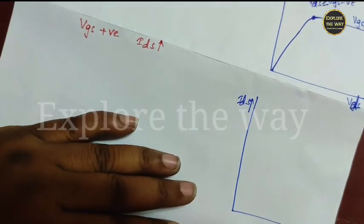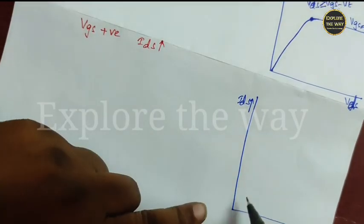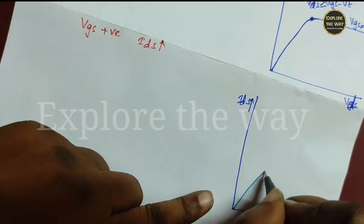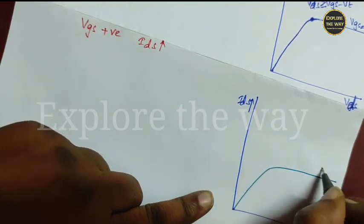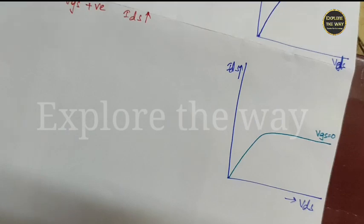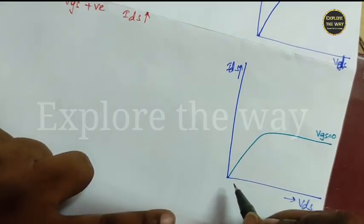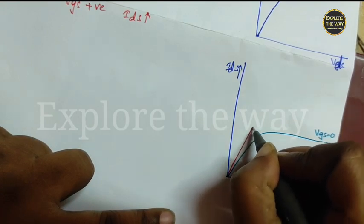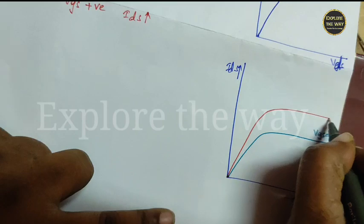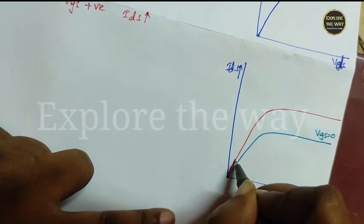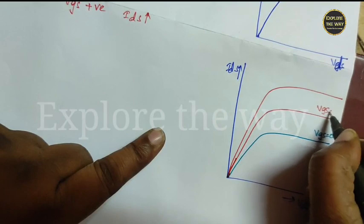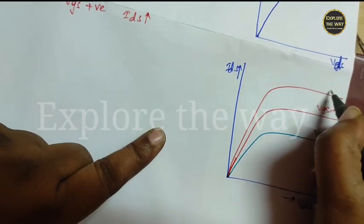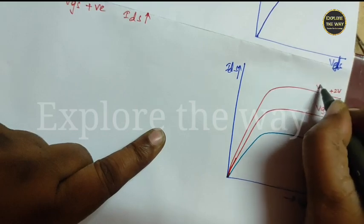We can draw the graph like this. Initially, when VGS is equal to 0, its characteristic is like this. If VGS is increased, then IDS also increases. The saturation point also increases. Its characteristics become like this. VGS is equal to plus 1 volt, plus 2 volt like this.